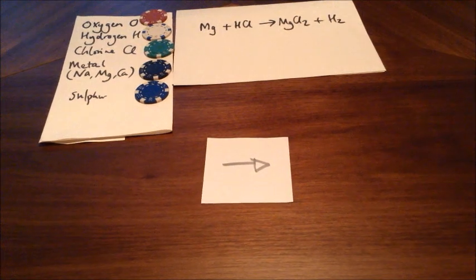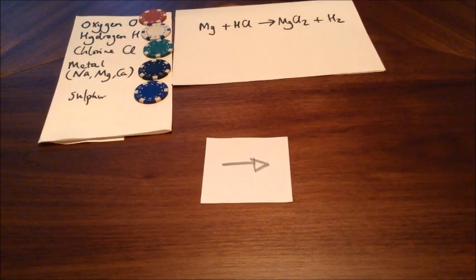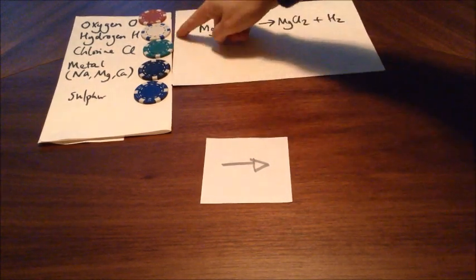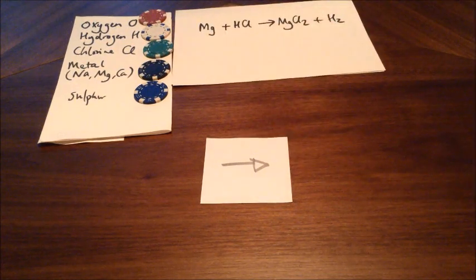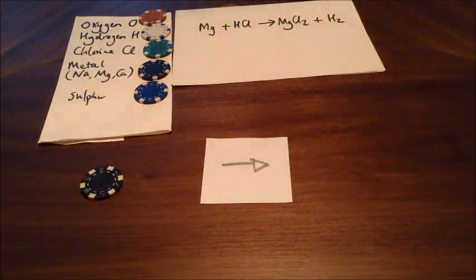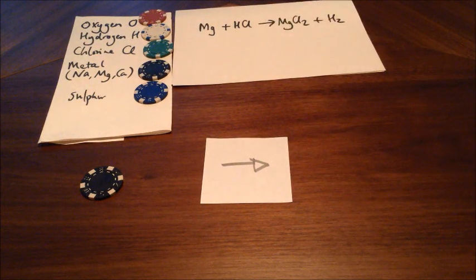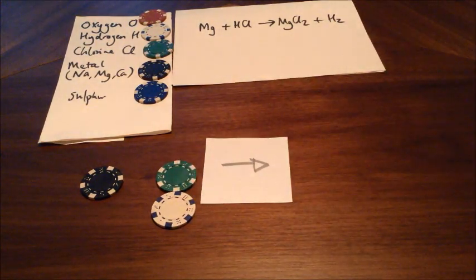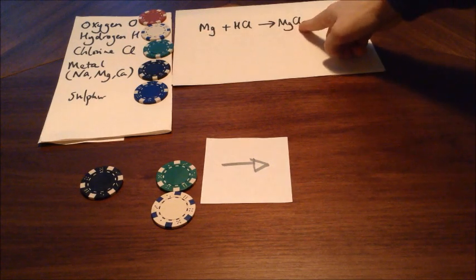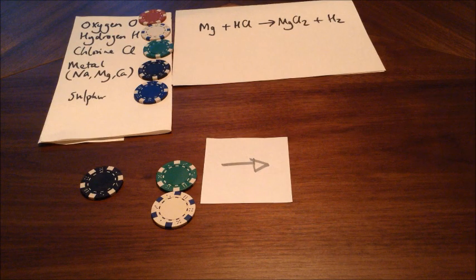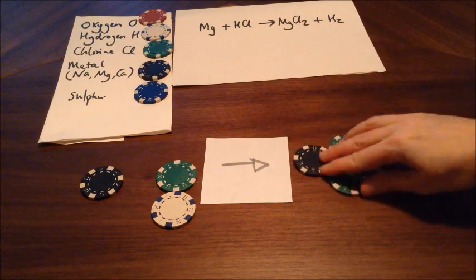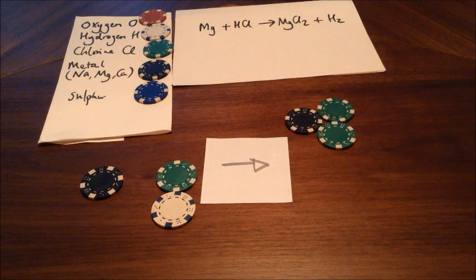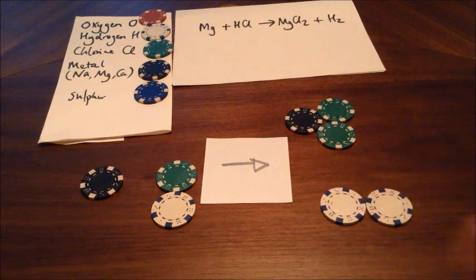I'm going to do a slightly more tricky one — magnesium and hydrochloric acid. My magnesium is one black chip. HCl, hydrochloric acid, is one white chip bonded to one green chip. You've been given the formula MgCl₂, so that's going to be one black chip and two green chips. And H₂ is two white chips together, because that two means you've got two hydrogen atoms bonded together.